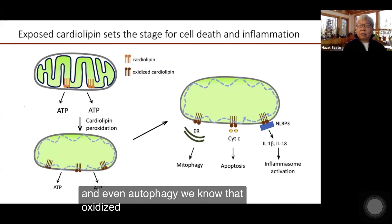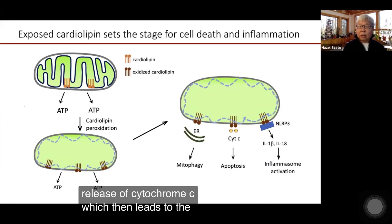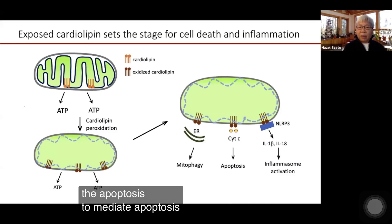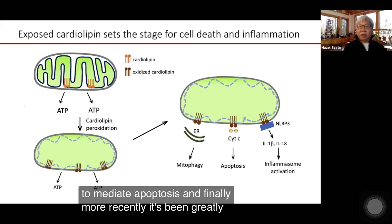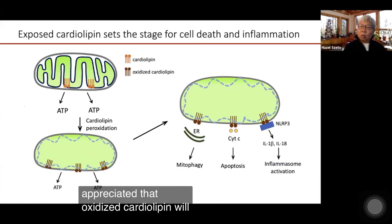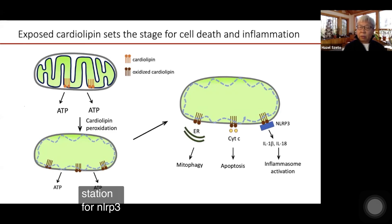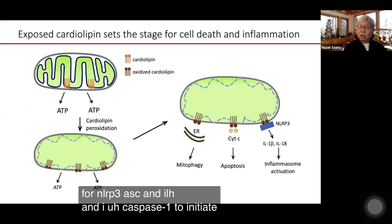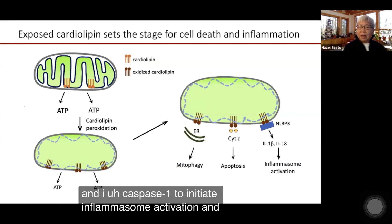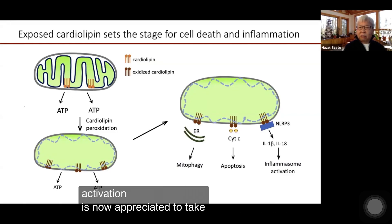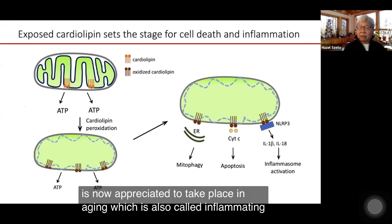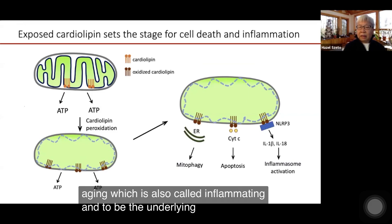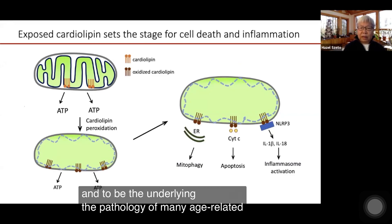We know that oxidized cardiolipin will also cause the release of cytochrome C, which then leads to the initiation of the apoptosome to mediate apoptosis. And finally, more recently it's been greatly appreciated that oxidized cardiolipin will form a docking station for NLRP3, ASC, and caspase-1 to initiate inflammasome activation. Inflammasome activation is now appreciated to take place in aging — also called inflammaging — and to underlie the pathology of many age-related diseases.